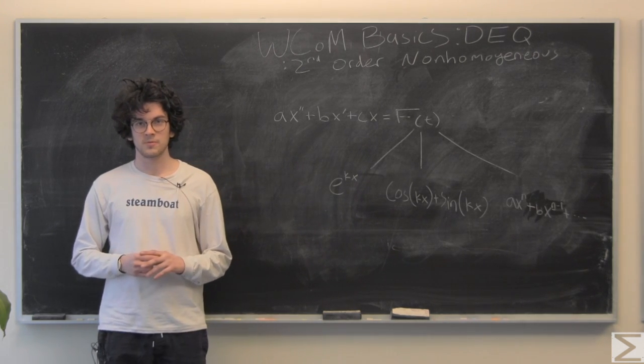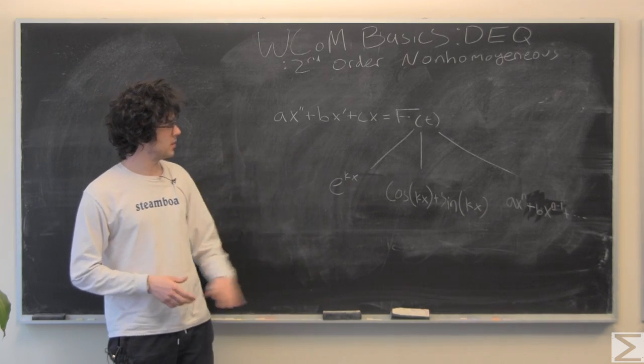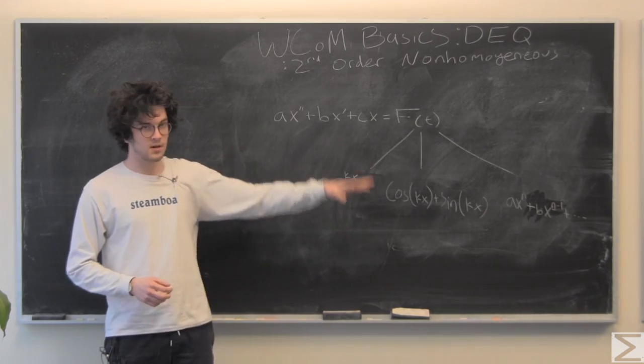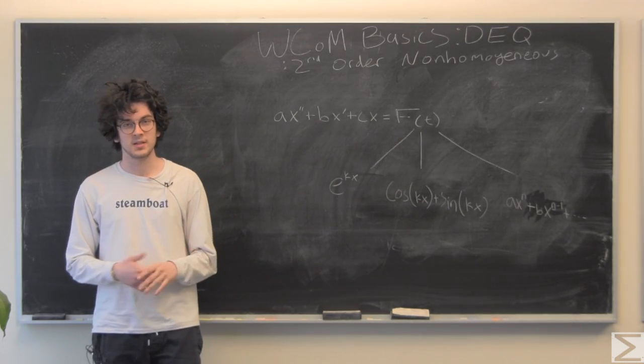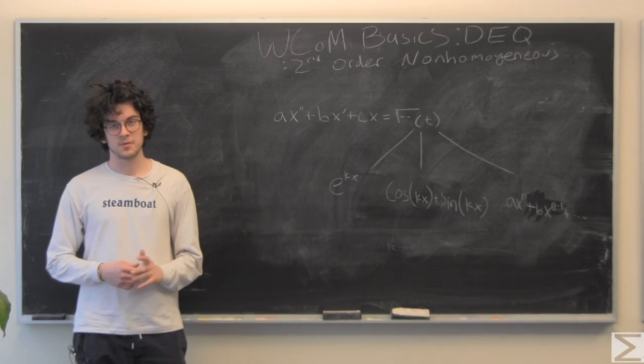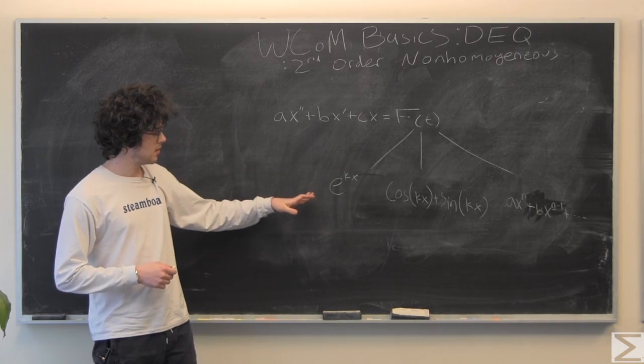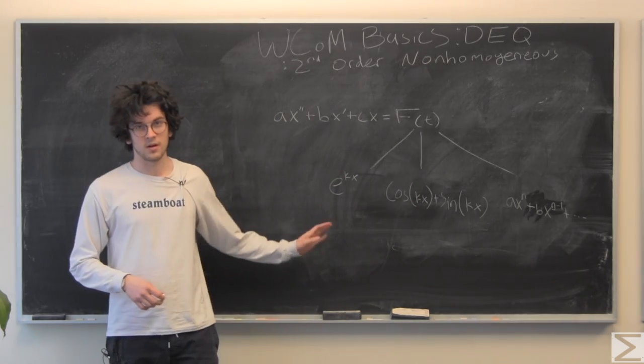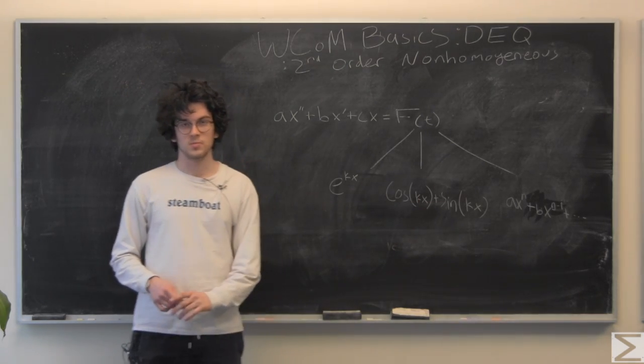In the last couple of videos we've been going over equations that take on this form. However, there's no f of t, f of t is just zero. There's a number of different equations that f of t could be. Three main ones that we're going to look at are exponentials, sinusoidal, and polynomials.